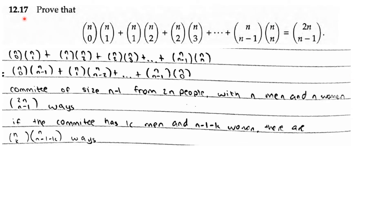AoPS Counting and Probability 12.17: prove that this identity holds. n choose 0 times n choose 1 plus n choose 1 and so on equals n choose 0 times n choose n minus 1 plus n choose 1 times n choose n minus 2, because they come in pairs. The committee of size n minus 1 chosen from 2n people with n men and n women is equivalent to this.